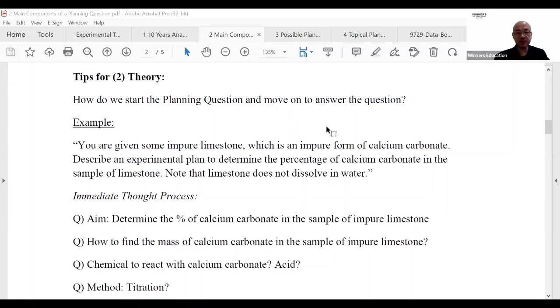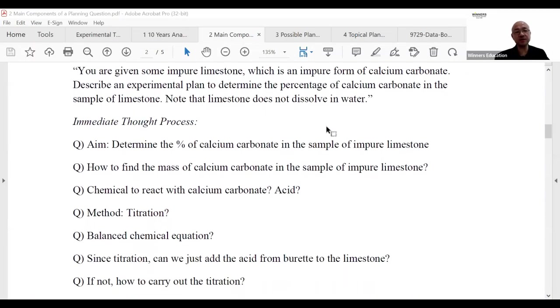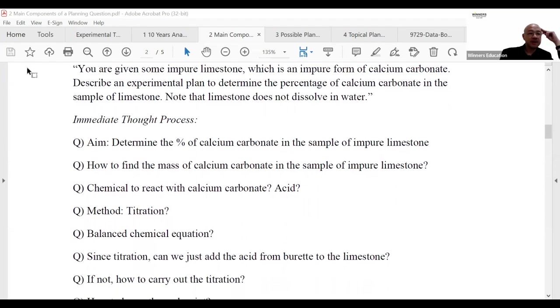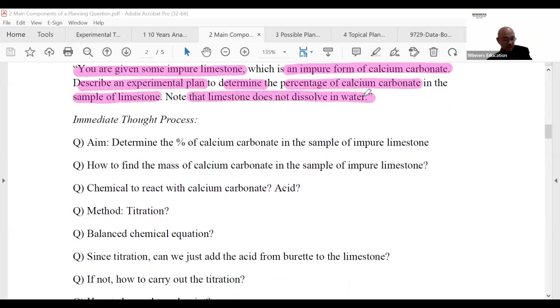So how do we start the planning question and move on to the question? An intro to this section - this is actually an actual exam question. You are given some impure limestone which is an impure form of calcium carbonate. Design an experimental plan to determine the percentage of calcium carbonate in the sample of limestone. Note that limestone does not dissolve in water.